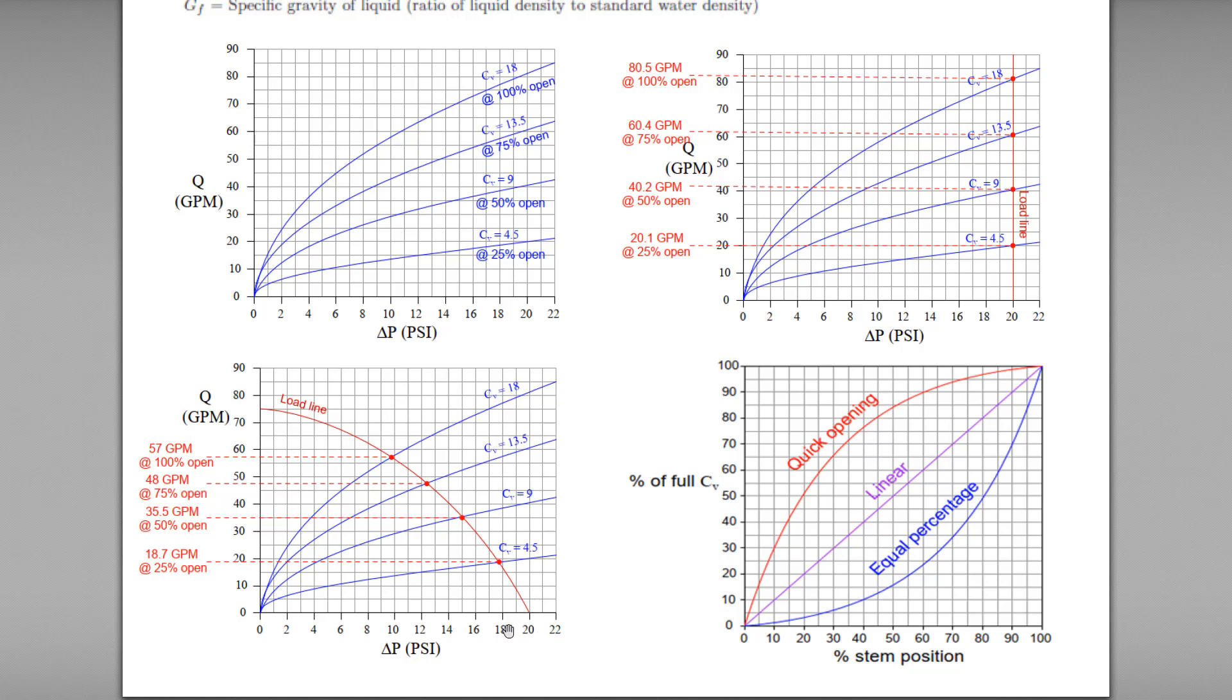If we reduce the pressure from 18 psi to 10 psi, what will happen? You can trace to the curve. You can see the CV will be 18 for the valve opening 100% and the corresponding flow rate will be roughly about 57 gallons per minute.